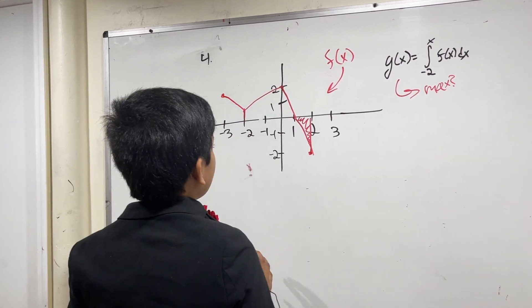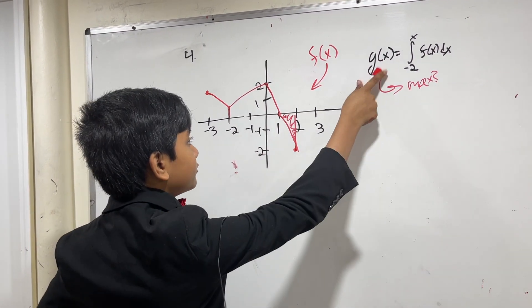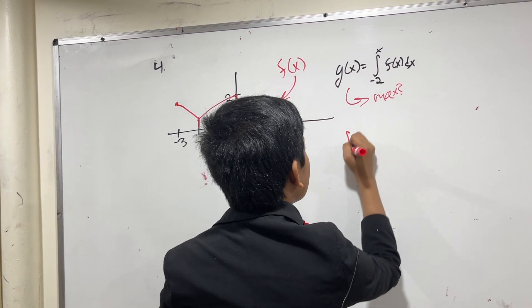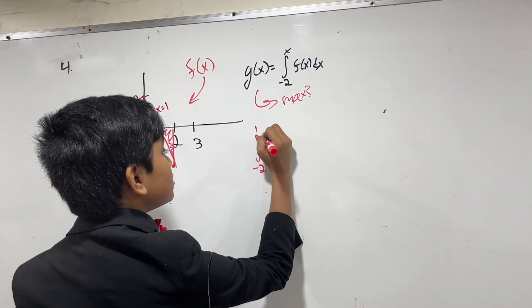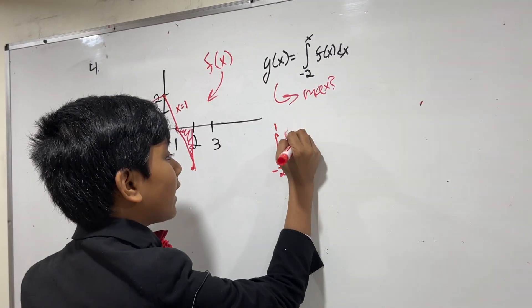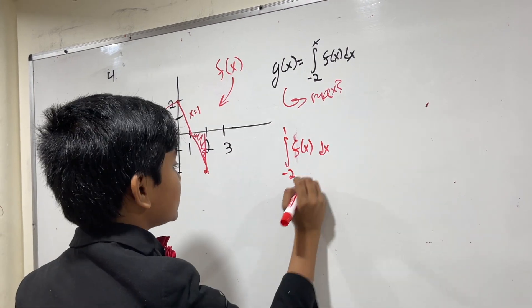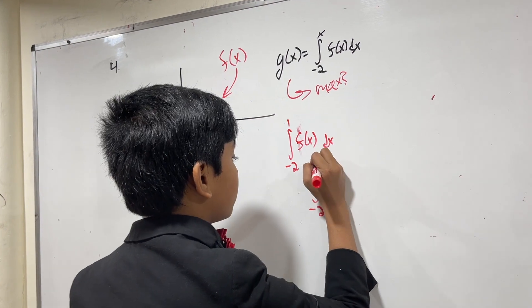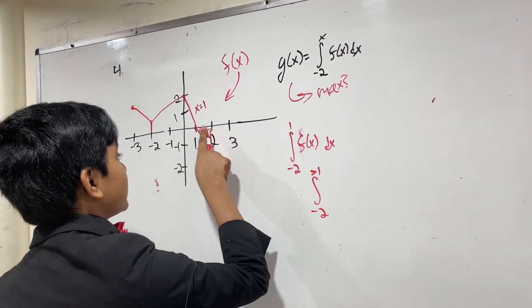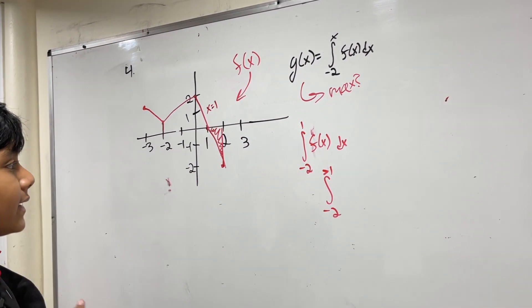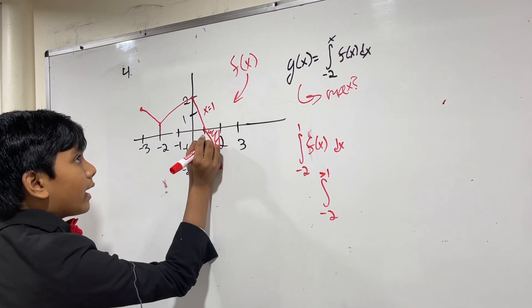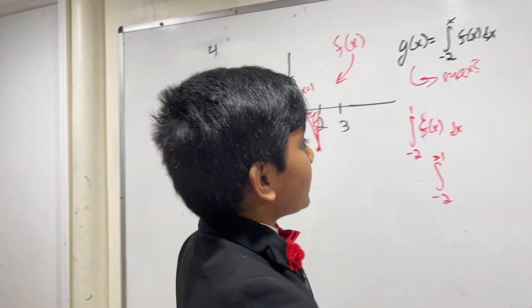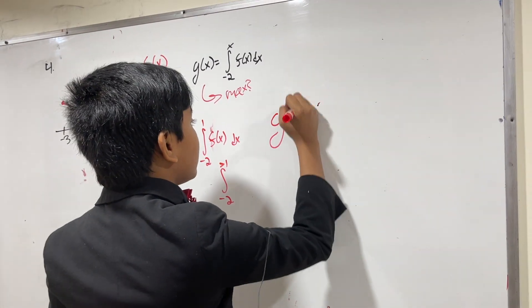So, meaning that the maximum of g of x is at x equals 1, because the integral from minus 2 to 1 of f of x dx is the largest. The integral from minus 2 to anything larger than 1 would have a little bit of stuff subtracted, because you can see that after 1, f of x becomes negative. So, that means that the answer would be g of 1.